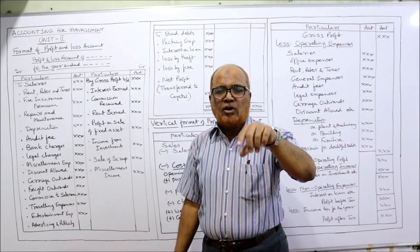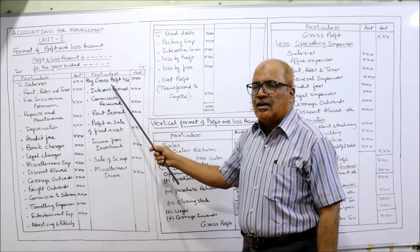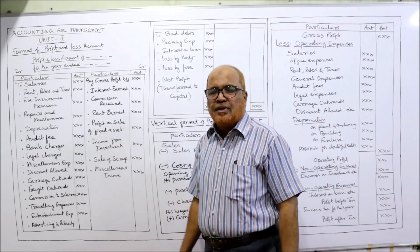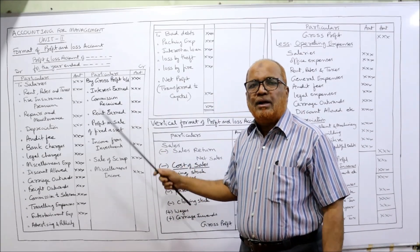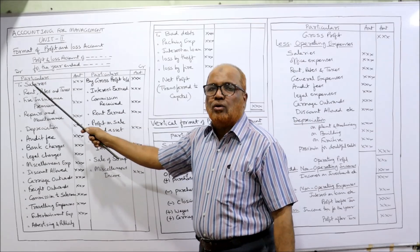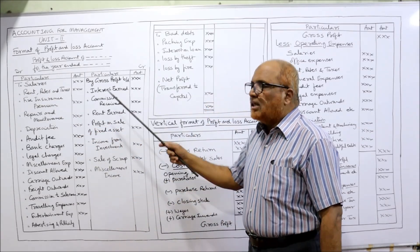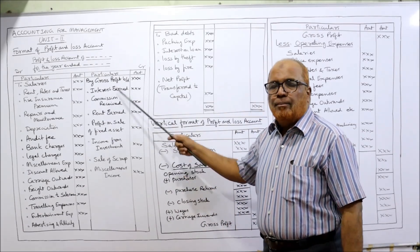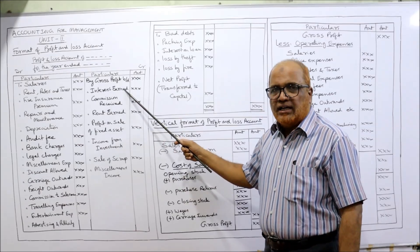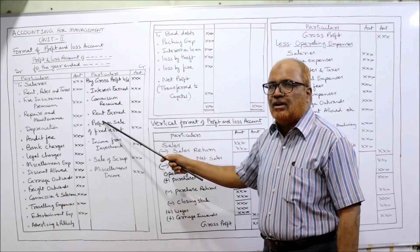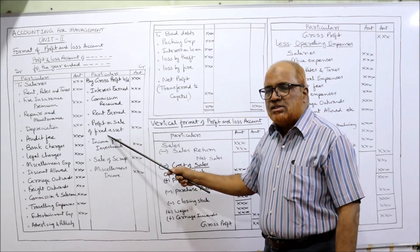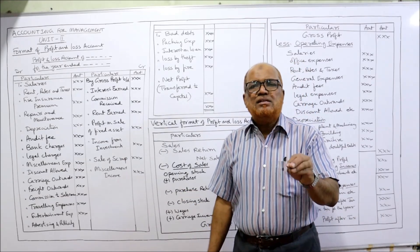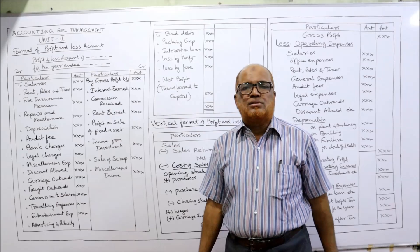Since we have already prepared the trading account and obtained the gross profit, we take it on the credit side. If there is a gross loss, it comes on the debit side. Normally we have a gross profit, so it is taken as 'gross profit brought down'. Other incomes also go on the credit side — such as interest earned or received, commission received, rent earned or received, and profit on sale of fixed assets.